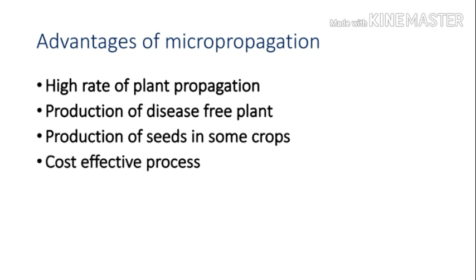The fourth point is cost-effective process. Micropropagation requires minimum growing space, which is why millions of plant species can be maintained inside culture vessels in a small room in a nursery. The production cost is relatively low, particularly in developing countries like India where manpower and labor charges are very low.